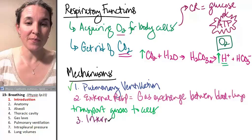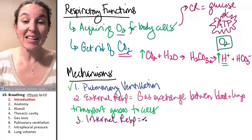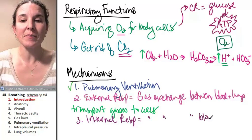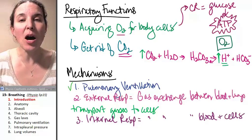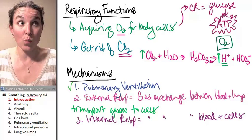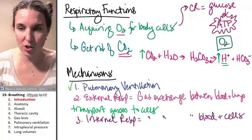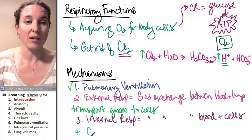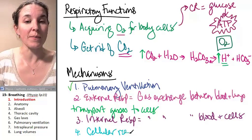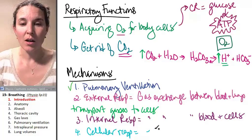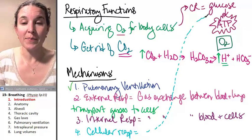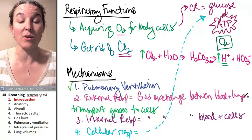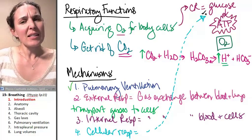And then once we get to the cells we have internal respiration. Internal respiration is gas exchange between blood and cells. The body cells need to get the oxygen and get rid of their carbon dioxide. That's considered internal respiration. This is not to be confused with my friend and favorite cellular respiration. And what's cellular respiration? Pardon the very long pathway. That's cellular respiration. Cellular respiration takes place in the mitochondria in the cells that are receiving the oxygen.